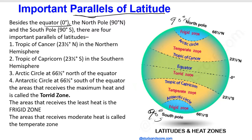There are four important lines of latitude you need to know. The equator is zero degrees. The first is the Tropic of Cancer, which is 23 and a half degrees North. The Tropic of Capricorn is 23 and a half degrees South. Then we have the Arctic Circle, which is 66 and a half degrees North, and the Antarctic Circle, which is 66 and a half degrees South of the equator.